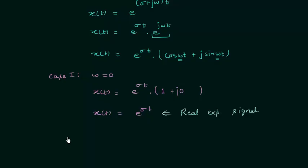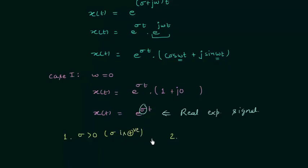For the real exponential signal, depending on the value of sigma we again have two cases. In the first case sigma is greater than 0 (positive), and in the second case sigma is less than 0 (negative). When sigma is positive we have an exponentially rising signal, and when sigma is less than 0 we have an exponentially decaying signal.